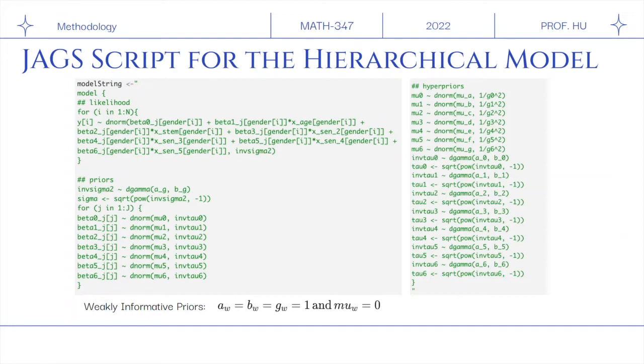So, sigma is going to be a gamma(1,1) distribution, and each of the regression coefficients in the two MLRs are going to be normally distributed, where their respective mu's is a normal(0,1) distribution and their respective tau's as a gamma(1,1). So, they're all just weakly informative.